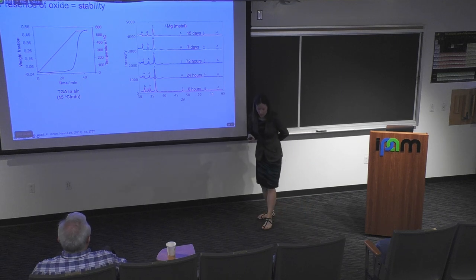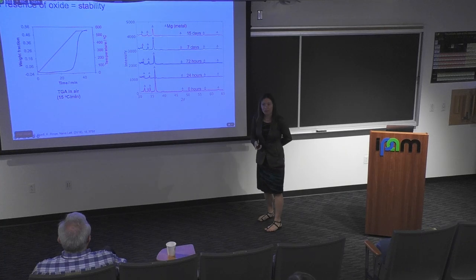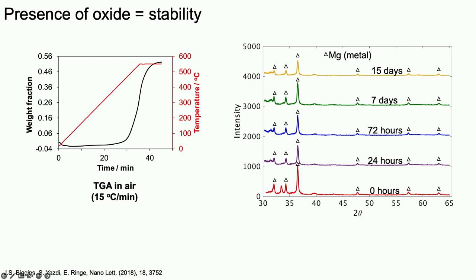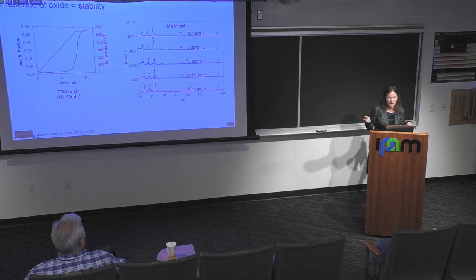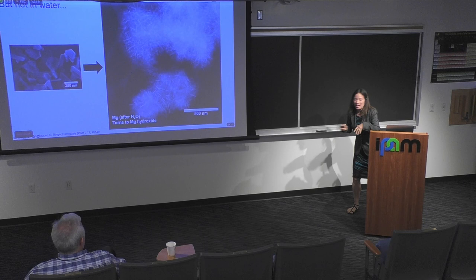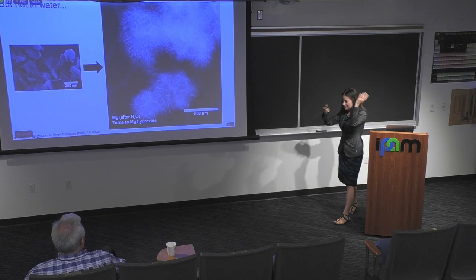We look at their stability — we can heat them up in air and nothing happens until about 400 degrees, so they're pretty stable. We can leave them to dry on the bench and a week or two later come back and there's still metallic magnesium. I hope I've convinced you that we're not making bombs here. Just don't mix them with water, because then the hydroxide takes over and the hydroxide is actually soluble.